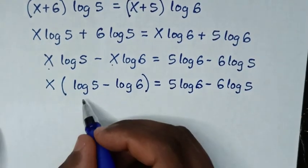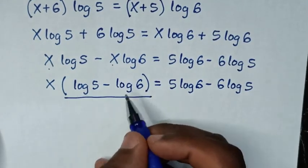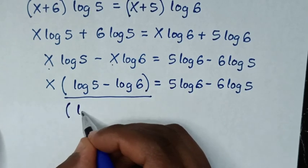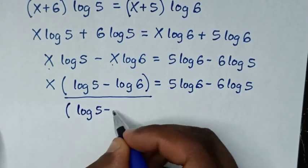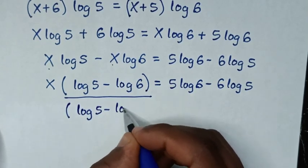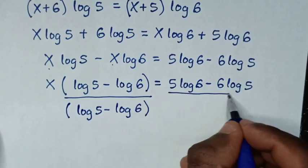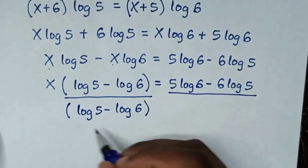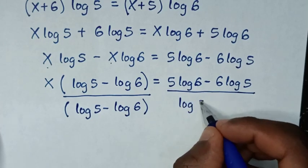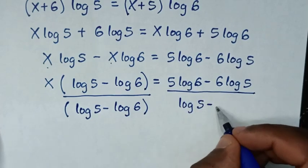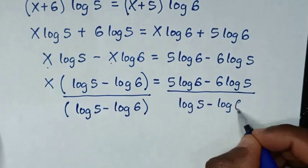Then in the next step, we'll divide by log of 5 minus log of 6 on both sides, so also here we'll divide by log of 5 minus log of 6.